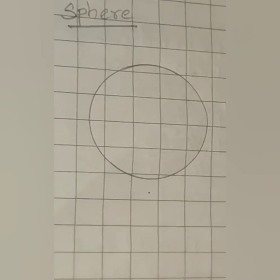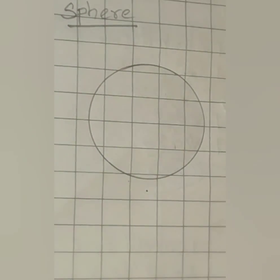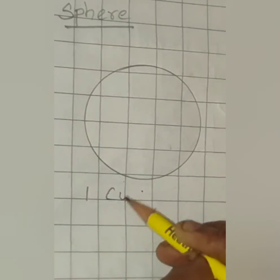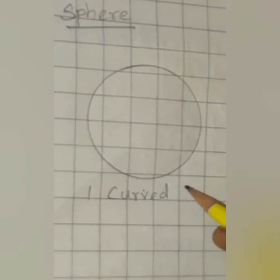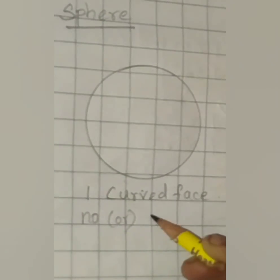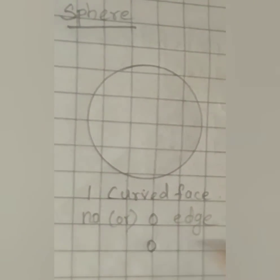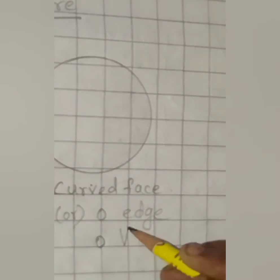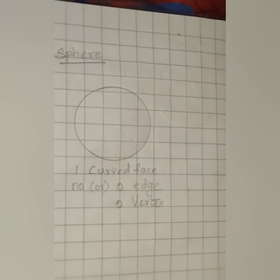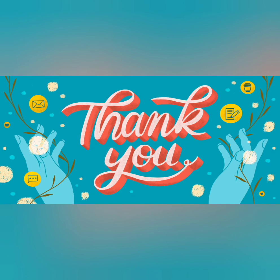Now coming to sphere. A sphere is the round shape — it has only one face, which is a curved face. It has no edge or corner, so we can say zero edges and zero corners. I hope all have understood how to draw the 3D shapes. Thank you.